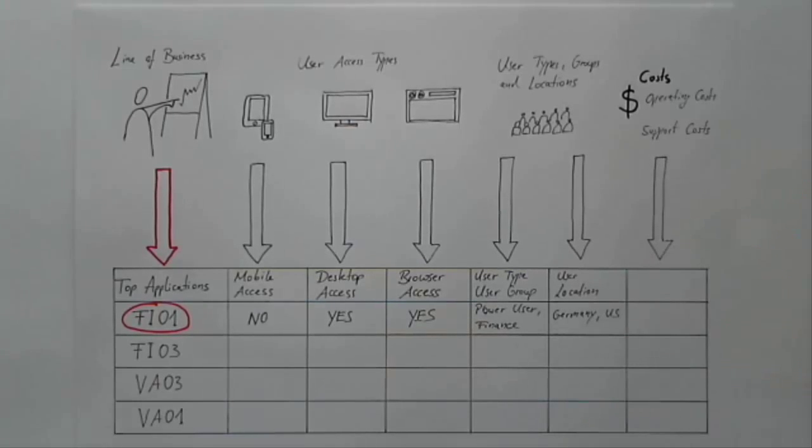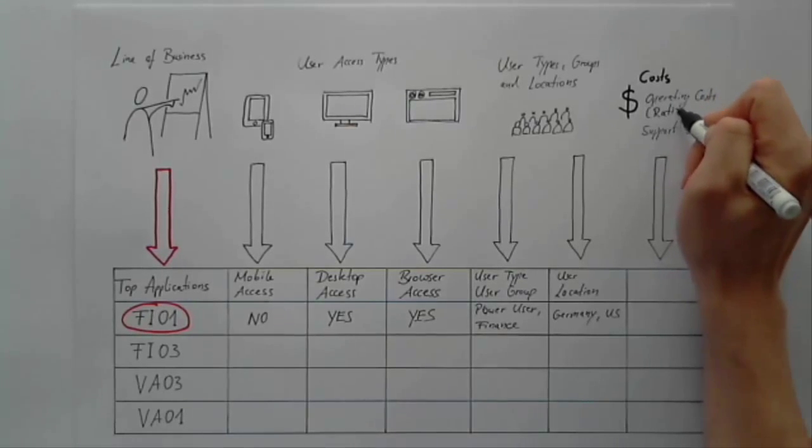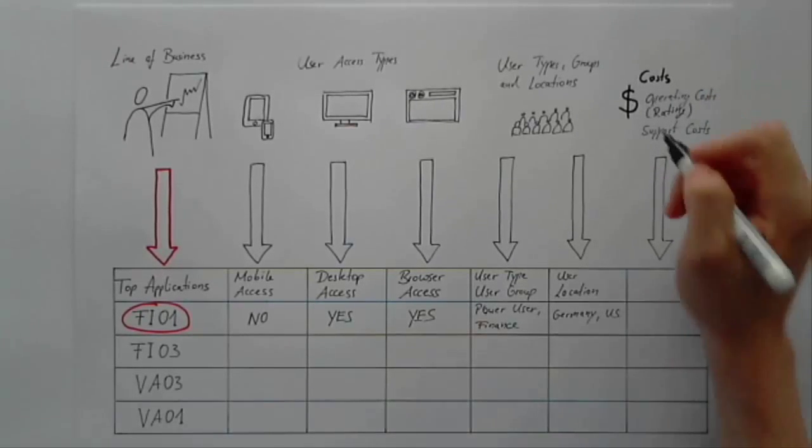If you don't have information handy to calculate costs, you could also look at the number of support messages, data corrections, or provide a rating like high, medium, low.